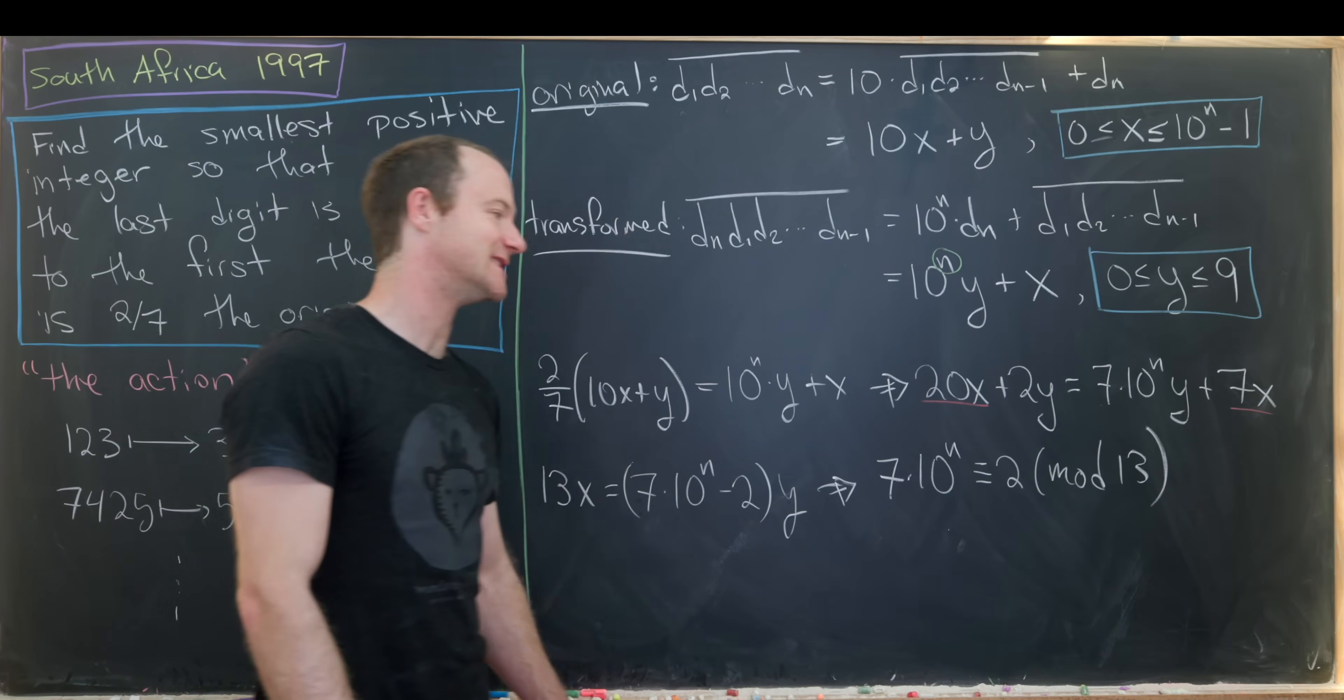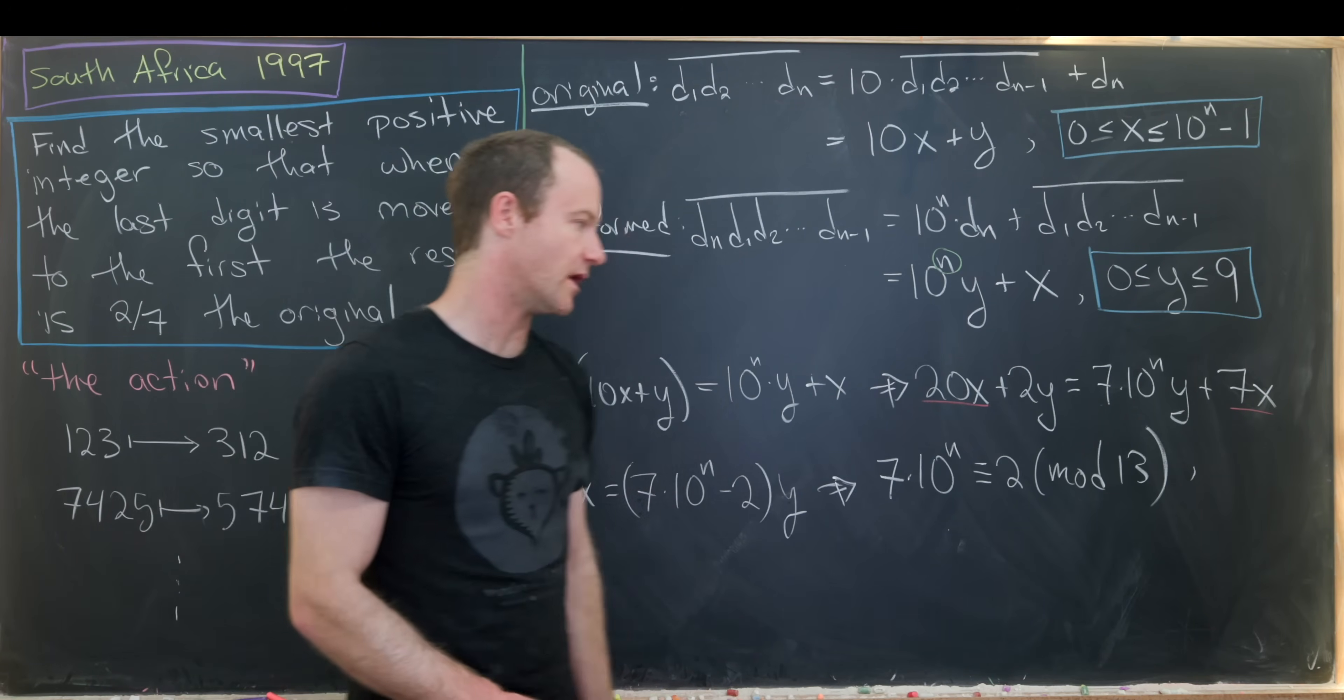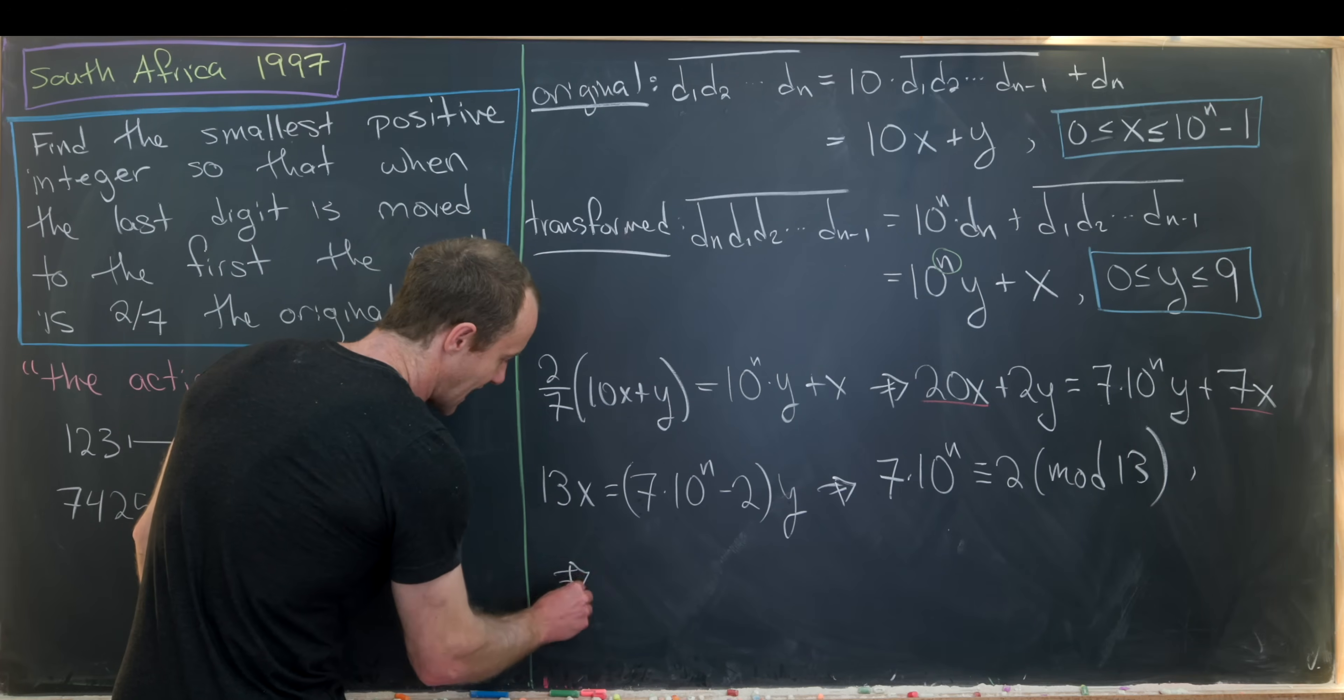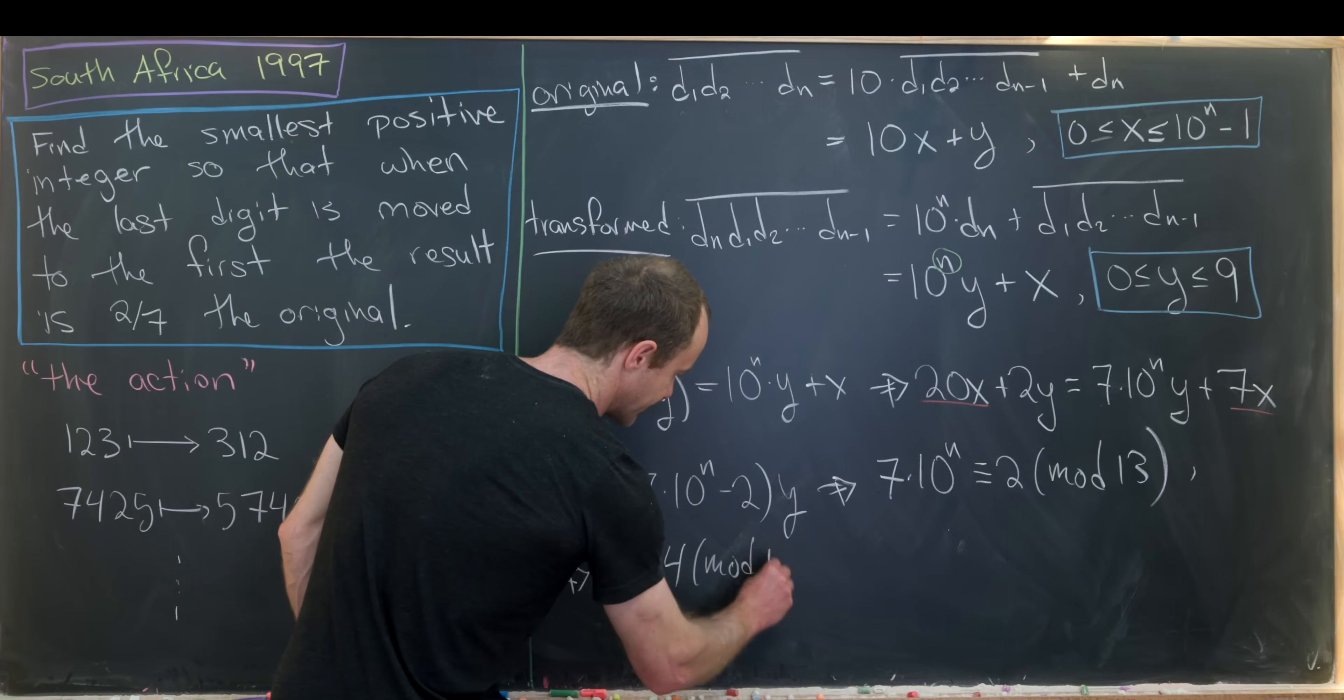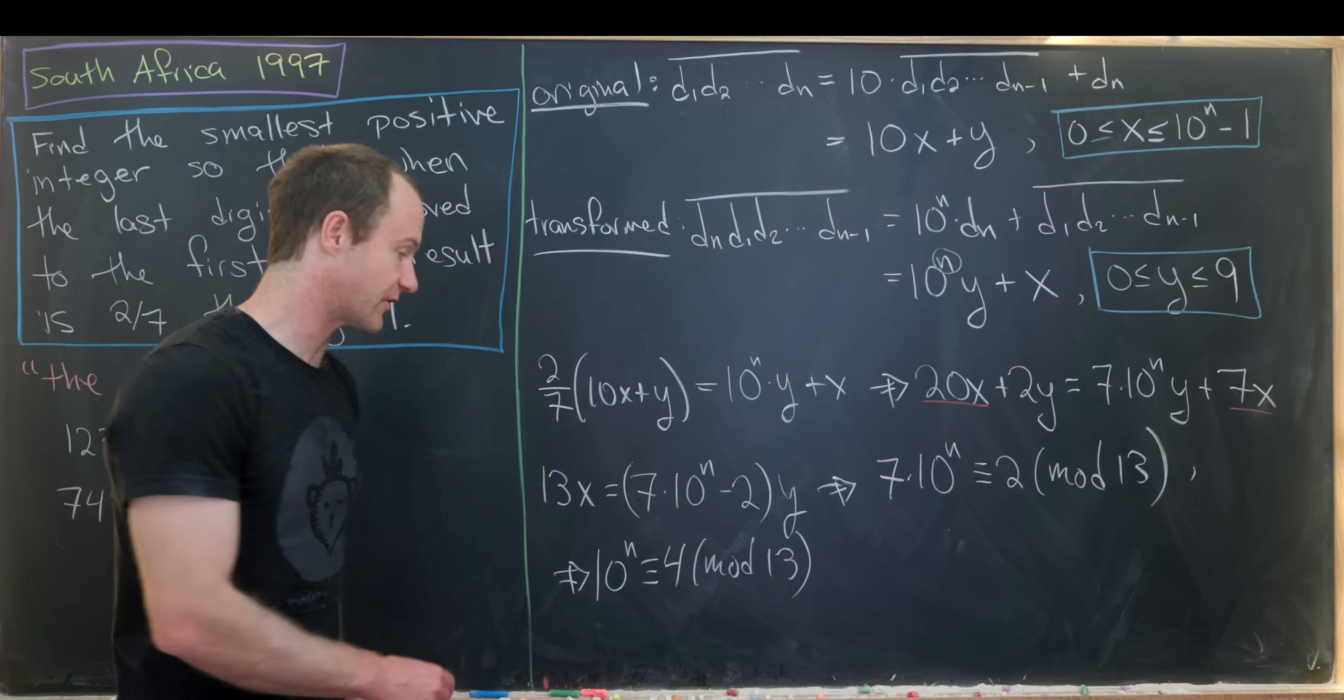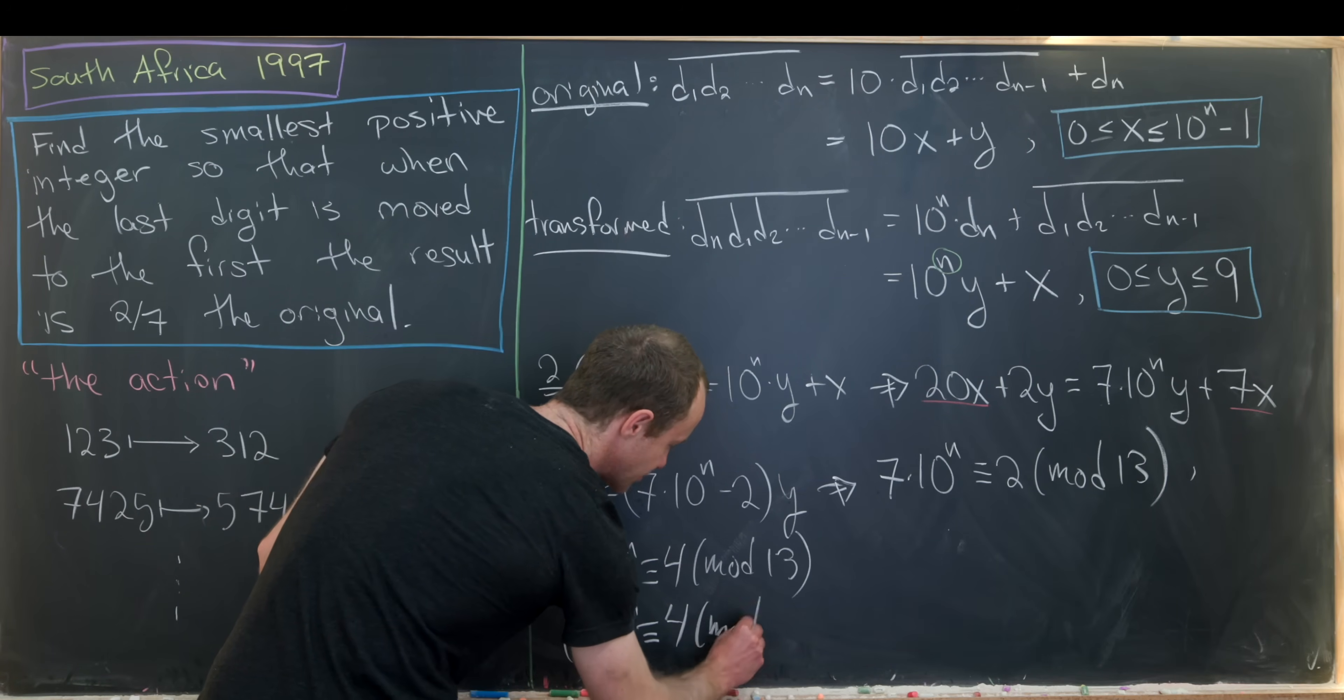Now let's solve for this 10 to the n. And let's do that by noticing that if we take 7 times 2, we get 14. But 14 is 1 mod 13. So that means we can multiply both sides of this by 2. And that'll clear this 7 here. So we'll have 10 to the n is congruent to 4 mod 13. But actually, 10 is a little bit trickier to deal with than we would like. But let's note that 10 is the same thing as negative 3 mod 13. So that sets up this exponential equation negative 3 to the n is congruent to 4 modulo 13.